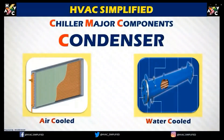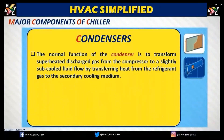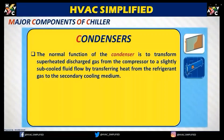The next major component is the condenser. Air condensers are of two types: air-cooled and water-cooled. The normal function of a condenser is to transform superheated discharge gas from the compressor to a slightly subcooled liquid by transferring heat from the refrigerant gas to a secondary cooling medium. A condenser releases heat from the refrigerant — in an air-cooled chiller, it interacts with air; in a water-cooled chiller, it transfers heat to water.